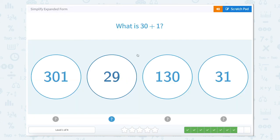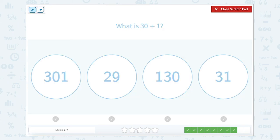What is 30 plus 1? Well, this one is 300 plus 1. This one is 20 plus 9. This one is 100 plus 30. And this one is 30 plus 1. So, 31.